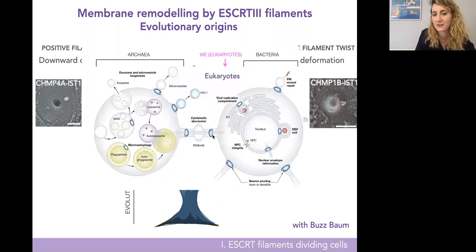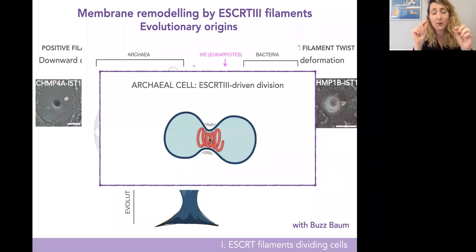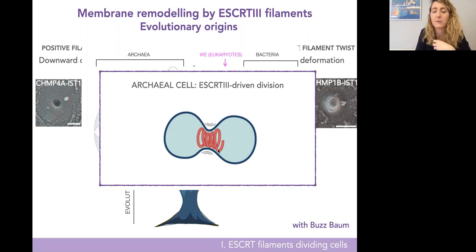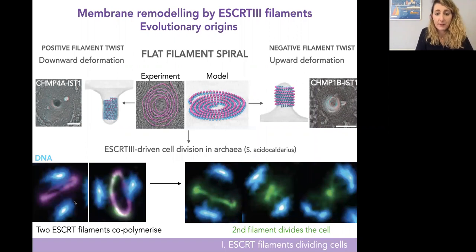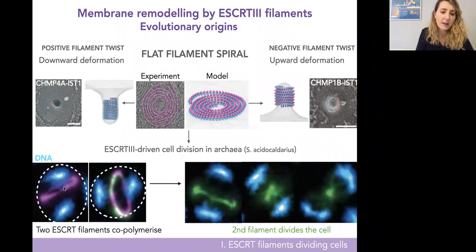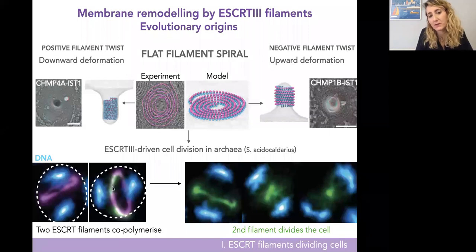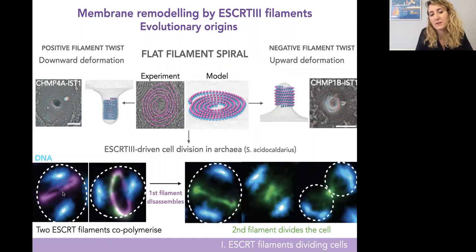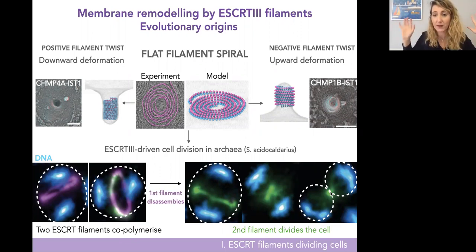If the machine does the same process in archaea and eukaryotes, some physical mechanisms had to be preserved, and we hoped it would be simpler in archaea for quantitative study. In eukaryotes, ESCRT does the scission of the cytokinetic bridge; in archaea, it does the full cell division. The scale is similar — for eukaryotic cells the bridge is around one micron, and archaeal cells that use ESCRT for division are also around one micron. In archaea, ESCRT filaments make first a ring in the middle of the cell, then another type of ESCRT filament polymerizes on top, ATP is consumed, the bottom filament disassembles, and the top one shrinks and divides the cell in two.